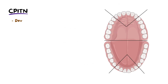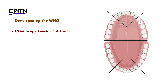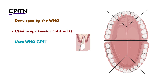First up is the CPITN, developed by the World Health Organization, or WHO. This serves a broader purpose — it is primarily used in epidemiology to gauge periodontal disease prevalence and severity across populations. Periodontal probing is done using a WHO probe, and the mouth is divided into sextants.